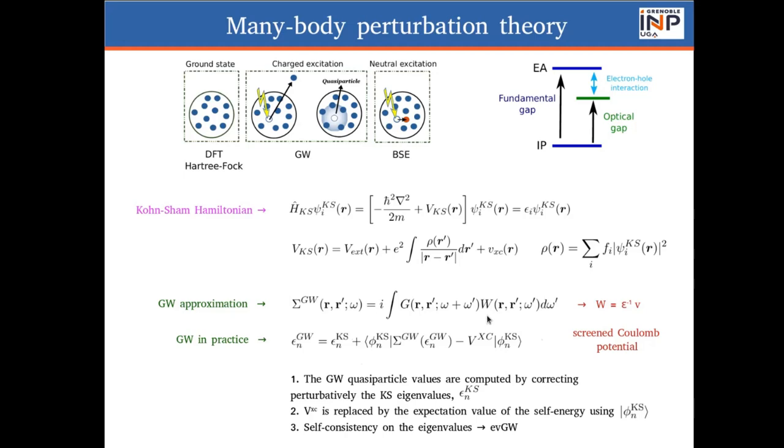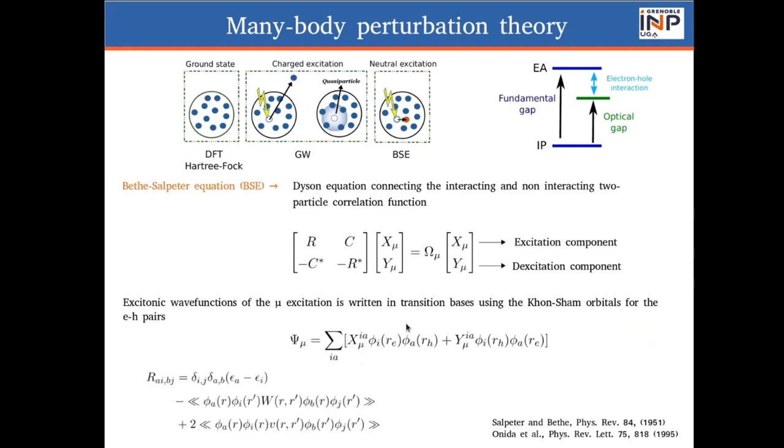All the data that I'm going to show are eigenvalue self-consistent values of GW, which means that we iterate several kinds of corrections until convergence within 0.1 eV in the energy. And then, starting from the Dyson equation that connects the interacting and non-interacting two-particle correlation function, we write the Bethe-Salpeter equation.